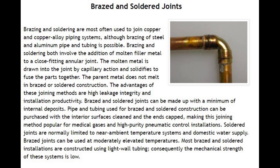Brazing and soldering are most often used to join copper and copper alloy piping systems, although brazing of steel and aluminum pipe and tubing is possible. Both involve the addition of molten filler metal to a close fitting annular joint. The molten metal is drawn into the joint by capillary action and solidifies to fuse the parts together. The parent metal does not melt in brazed or soldered construction. The advantages of these joining methods are high leakage integrity and installation productivity. Brazed and soldered joints can be made up with a minimum of internal deposits.